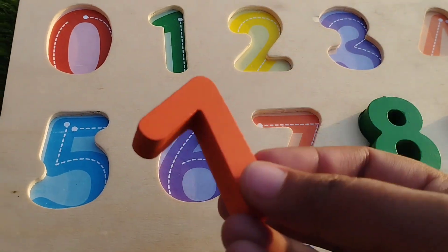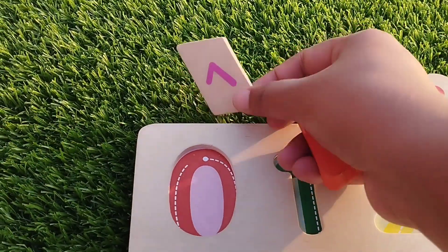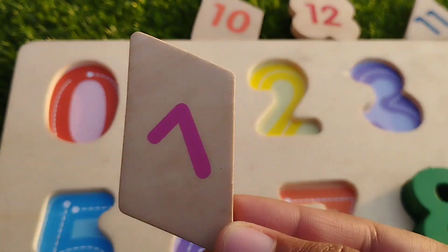The next number is number seven. Rhombus. This is rhombus shape.